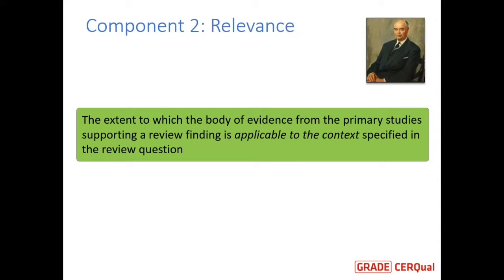The second component is relevance. We've defined this as the extent to which the body of evidence from the primary studies supporting a review finding is applicable to the context specified in the review question. In any review question, there'll be a context specified in terms of the population, the health issue, perhaps an intervention, and there may be specific settings specified as well, such as primary care or communities.